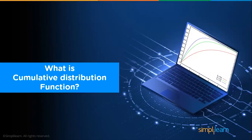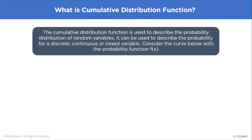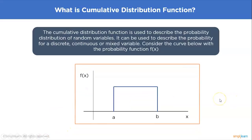What is the cumulative distribution function? The CDF is used to describe the probability distribution of random variables. It can be used to describe the probability for a discrete, continuous, or mixed variable. Basically, the CDF of a random variable is just another method to describe the distribution of random variables, with the advantage that it can be defined for any kind of random variable.